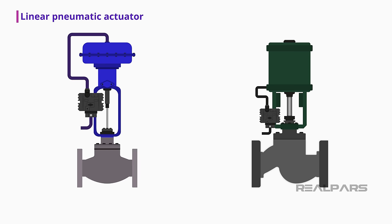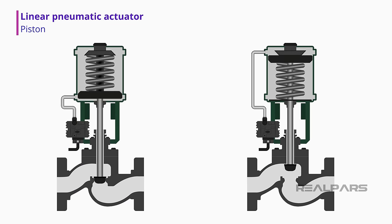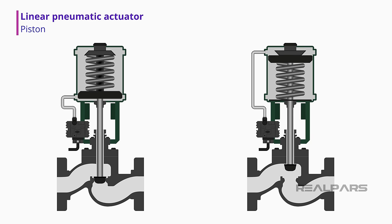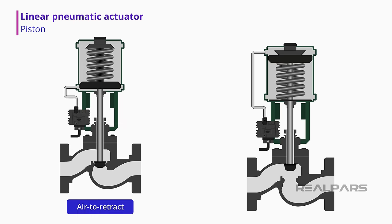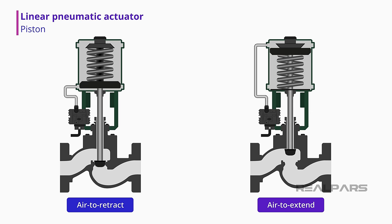In the linear pneumatic actuator category, the spring diaphragm style and the piston style are very common. The piston style pneumatic actuator utilizes a piston inside a cylinder. The movement of the piston is caused by applying pneumatic pressure, thereby moving the piston upwards. Removing the pneumatic pressure causes the piston to move downward due to the pressure of the spring — this motion is referred to as air to retract. An air to extend motion can also be achieved by rearranging the spring, piston, and pneumatic supply.